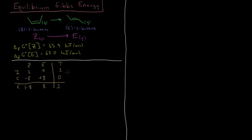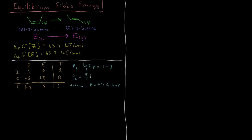Let's get these in terms of pressures for individual reactants and products. The pressure of Z equals its mole fraction times total pressure: (1 minus ξ) divided by 1, times the total pressure P. We assume standard pressure of 1 bar, so pressure of Z is just 1 minus ξ bar. Similarly, pressure of E is its mole fraction C over 1 times total pressure of 1, so its pressure is ξ bar.